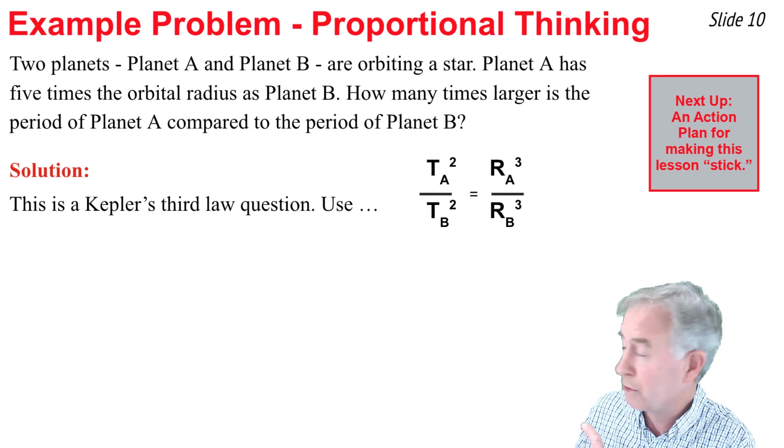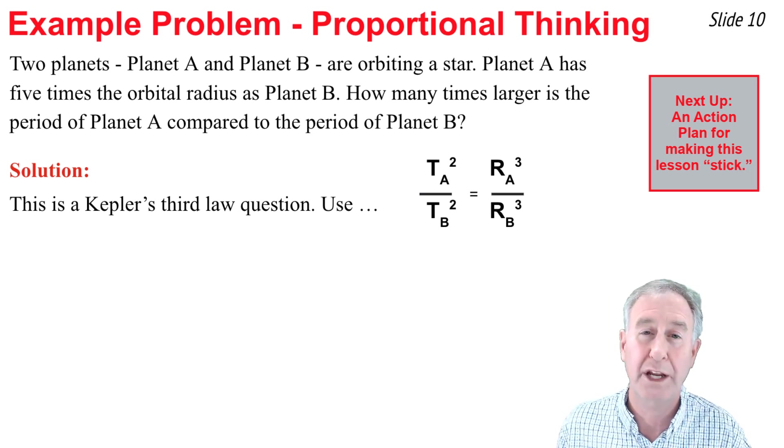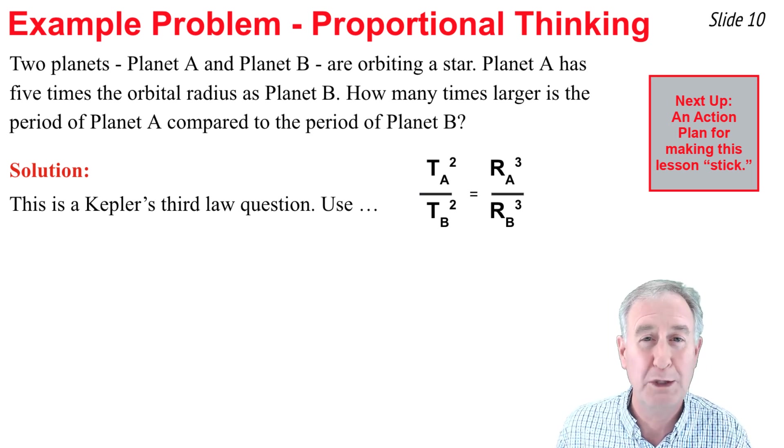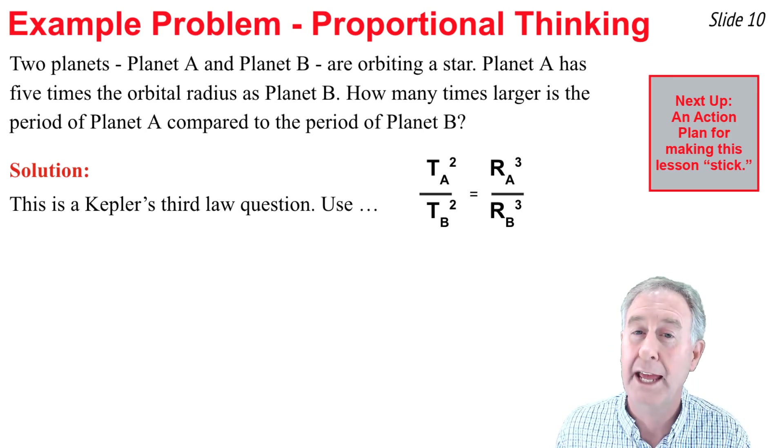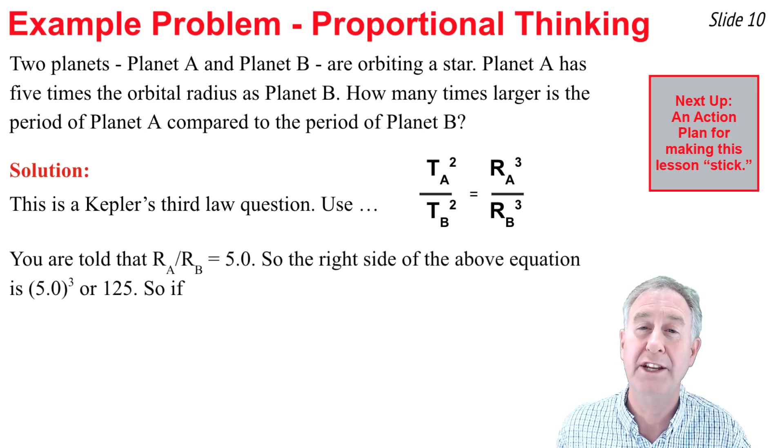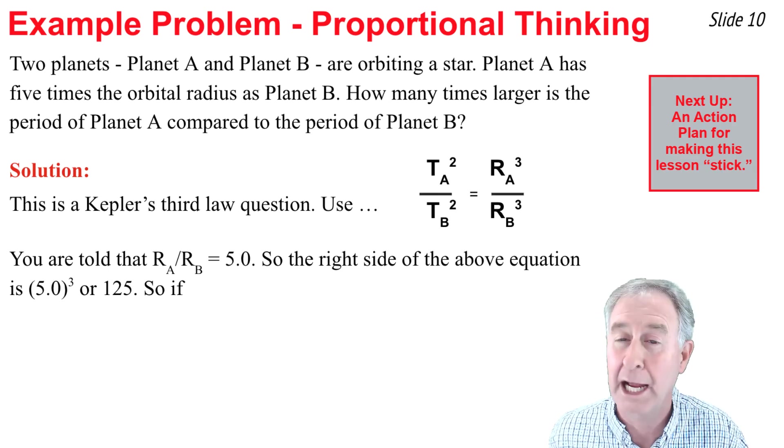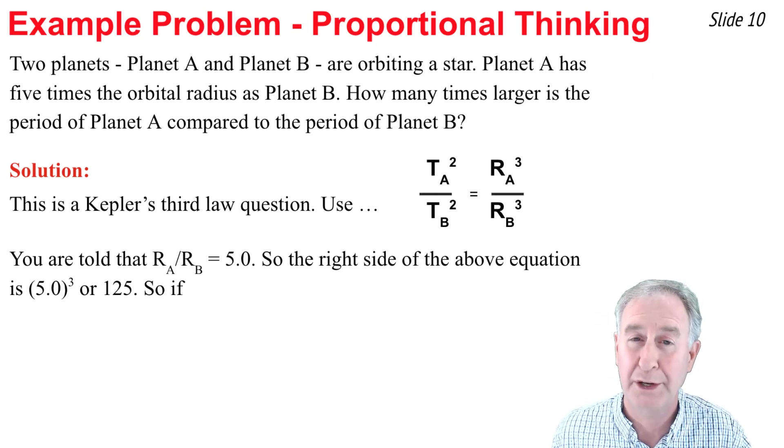This is a Kepler's third law question. We can use the Kepler's third law equation that states that the ratio of the period squared for any two planets equal the ratio of the radius cubed. I happen to know the ratio of the radius of A to the radius of B. I was told that it was 5.0.